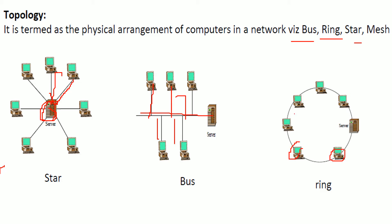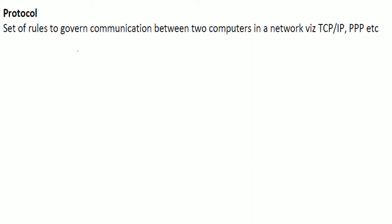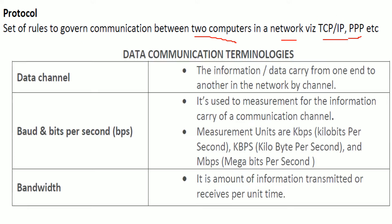What is a protocol? Just like when you meet someone you speak in a certain way — more formally or informally depending on the person — there are certain rules that govern communication between computers in a network. These rules are called protocols, for example TCP/IP and Point-to-Point Protocol.